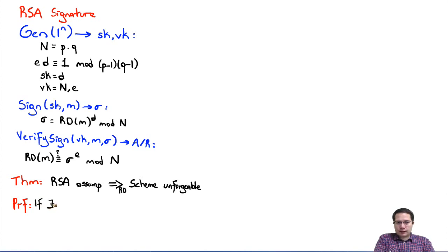If there exists a probabilistic polynomial time adversary A that breaks the scheme, meaning forges a signature with non-negligible probability using this scheme, then we are going to construct another PPT adversary, let's call it B, that breaks the RSA assumption, again with non-negligible probability. For this proof, as usual, let us draw our adversaries.